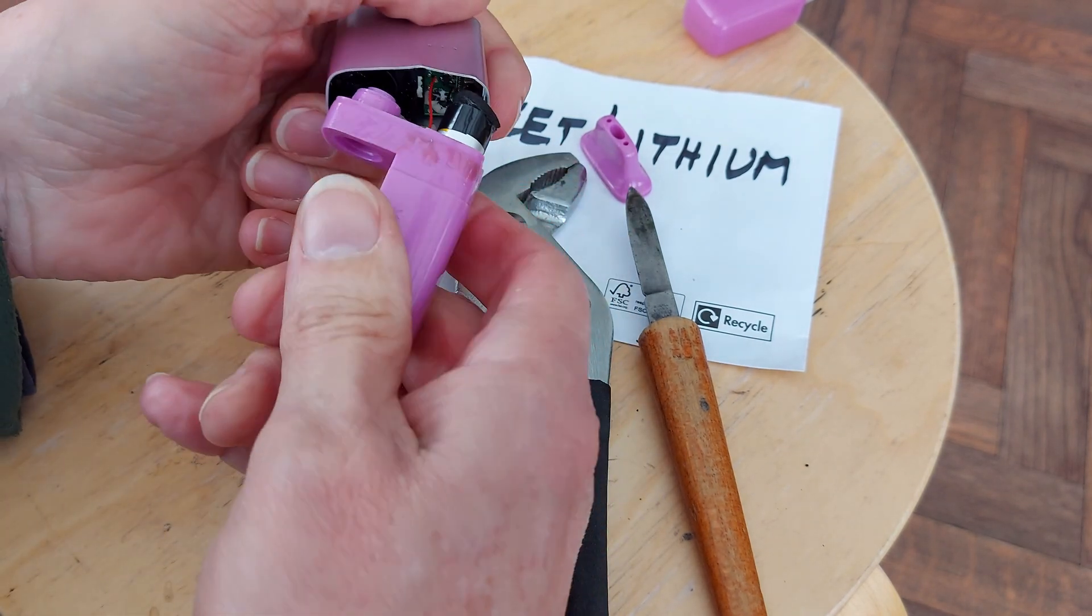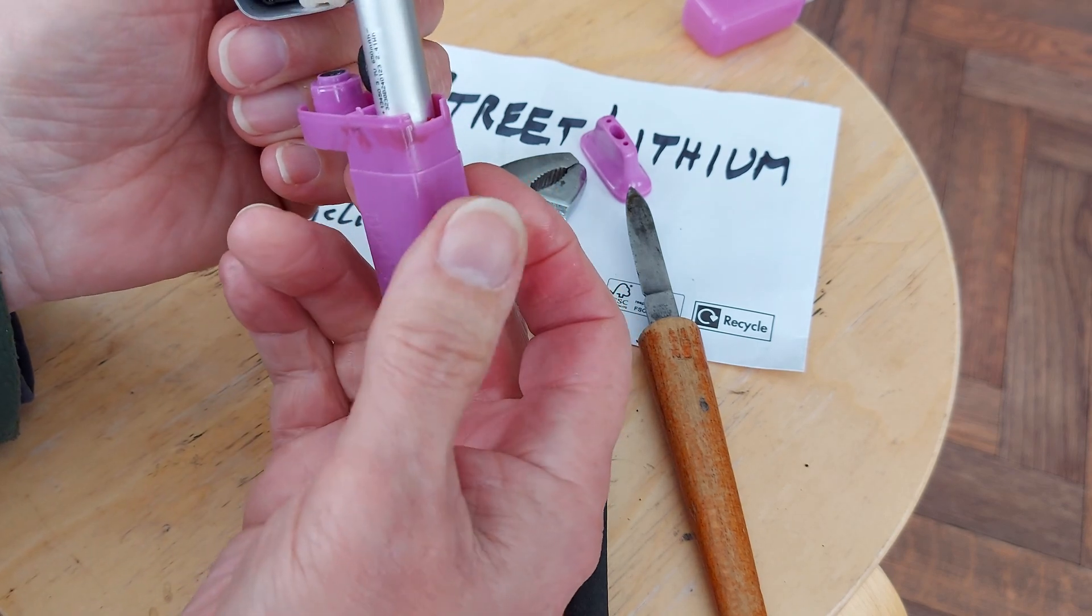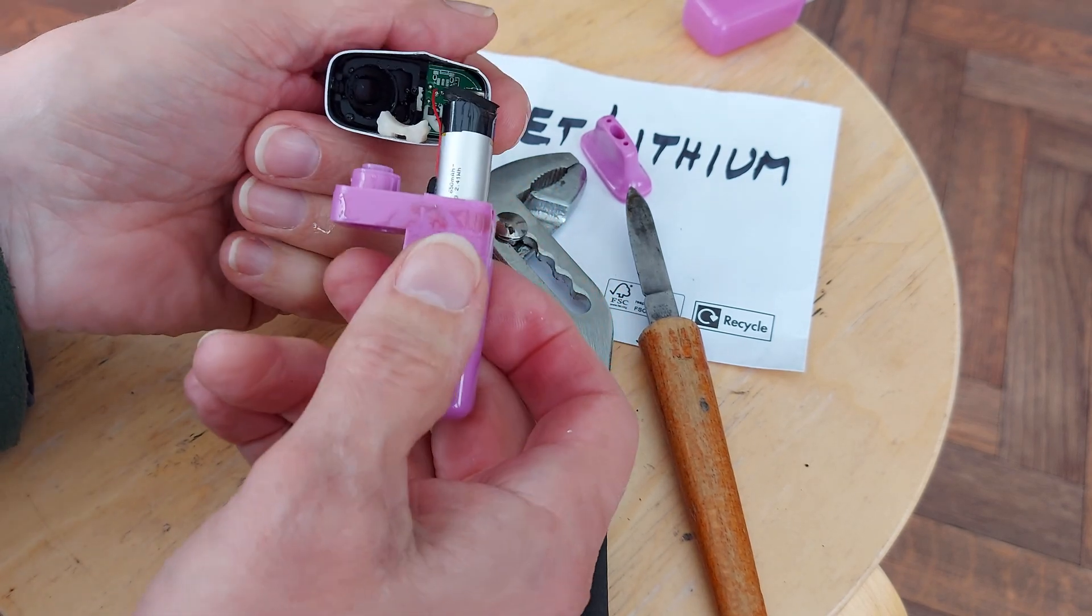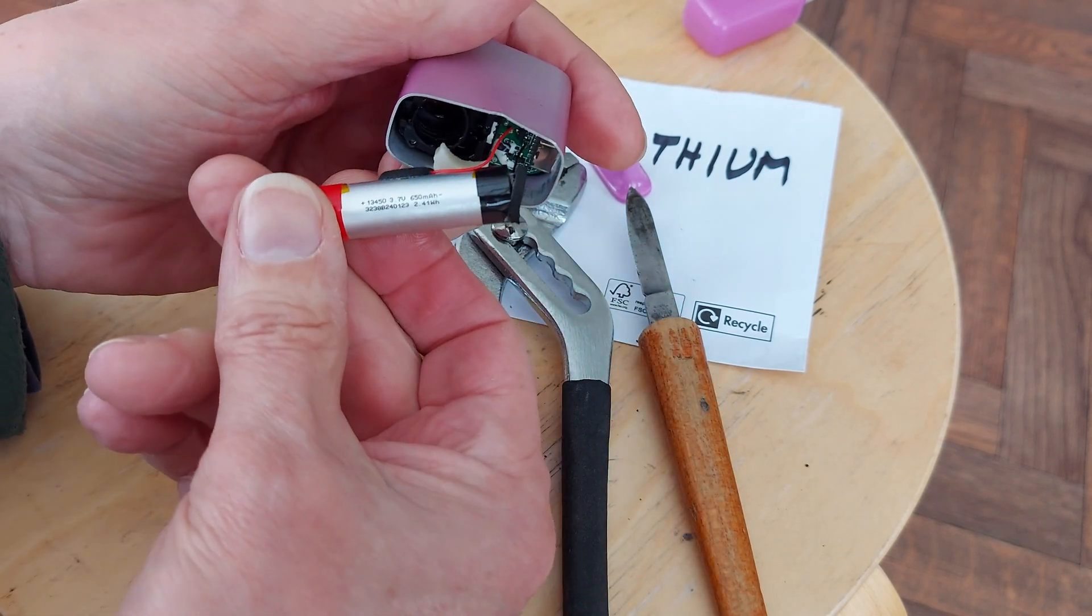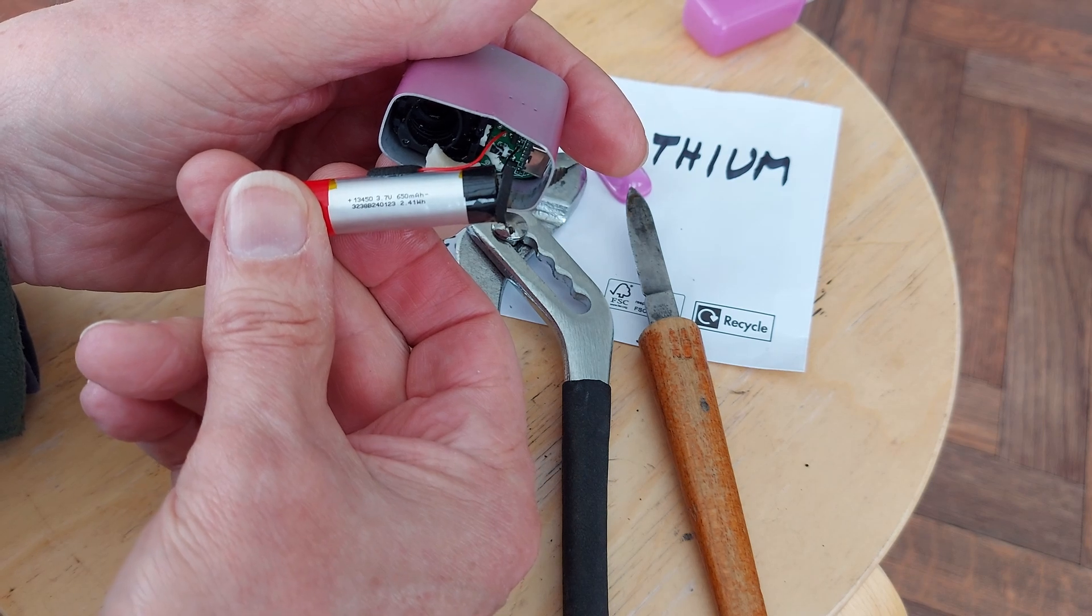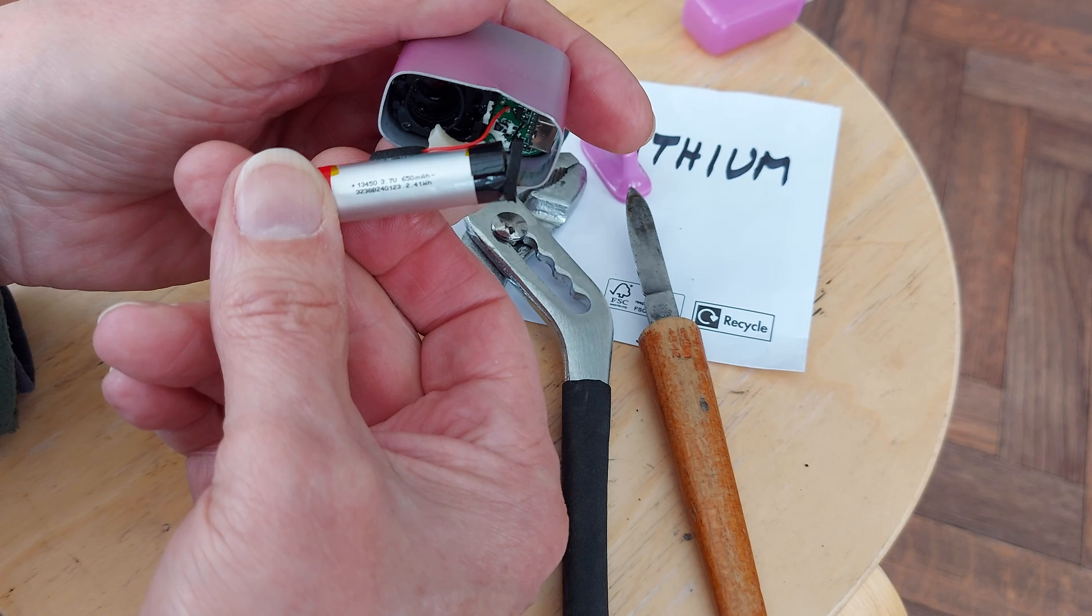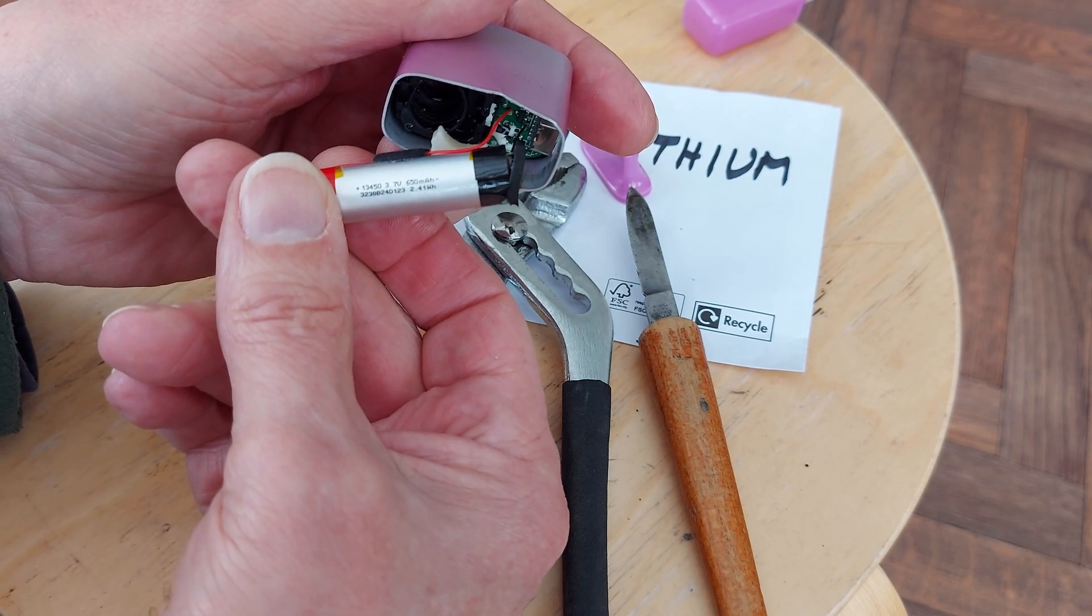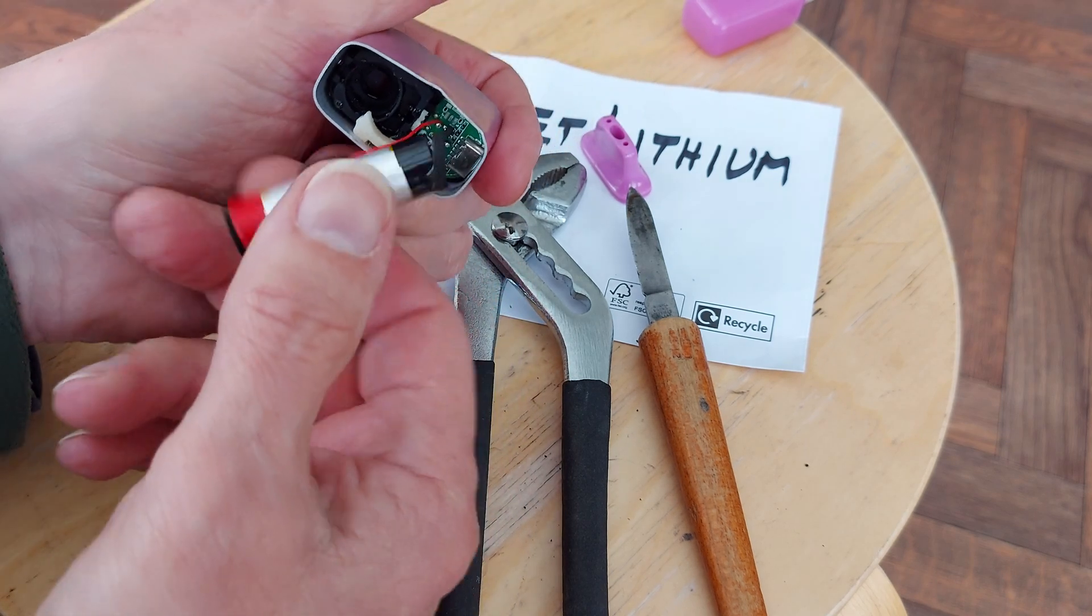There we go. Right, we're in. Okay yeah, the battery was in that bit, like I expected. Not a particularly big battery. 13450. 13mm diameter, 45mm long. And the O indicating it's a cylindrical shape rather than a flat one.